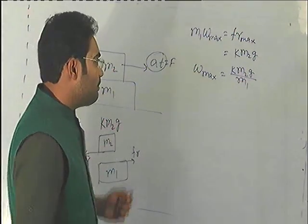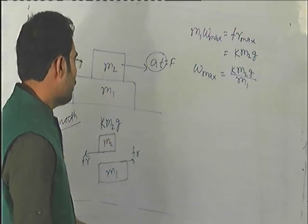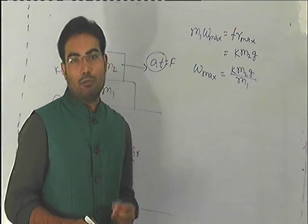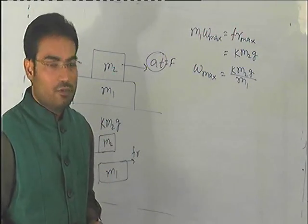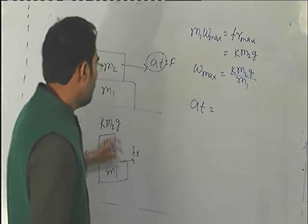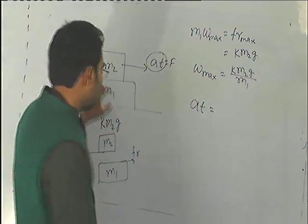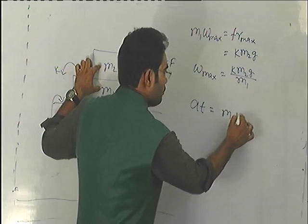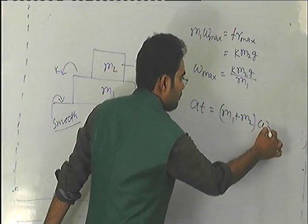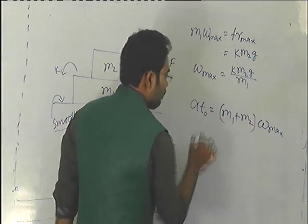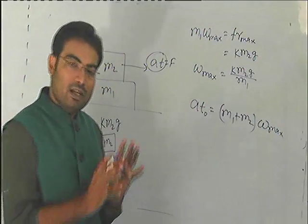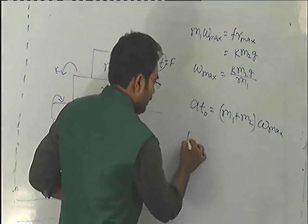At the maximum acceleration, at equals total mass times acceleration. Total mass means m1 plus m2 times the maximum acceleration. At time T0, this whole system will move together.